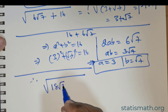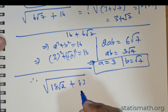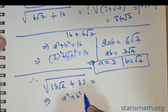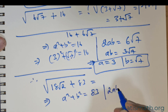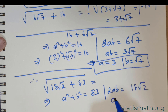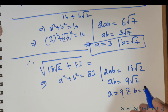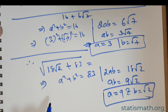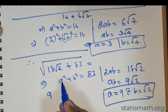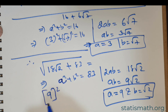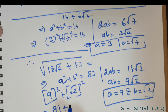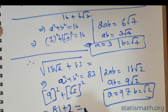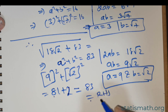We have been given √(18√2 + 83). So a² + b² is going to produce 83, and 2ab is going to produce 18√2. From here, ab = 9√2, which means a = 9 and b = √2. Substituting to verify: 9² + (√2)² = 81 + 2 = 83, which equals the right-hand side.